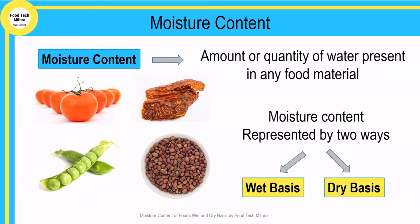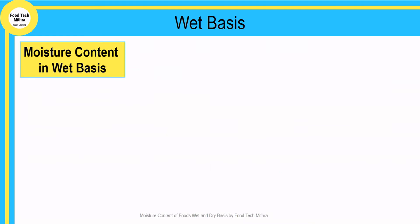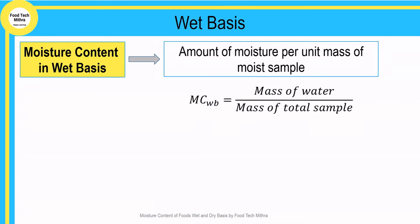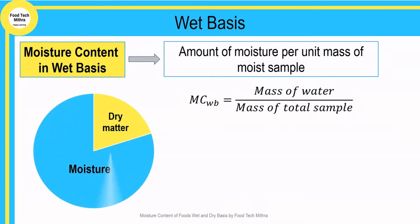Normally moisture content is represented in two ways: wet basis and dry basis. Wet basis moisture content is the mass of water vapor per unit mass of moist sample — that is, the mass of water divided by the mass of the total sample. For example, consider the whole mass of a sample which consists of moisture and dry matter.